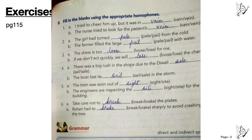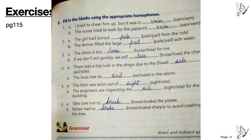Page number 115, number 1 answer vain and vane, only the difference is the spelling. Then number 2 pale and pail, number 3 lose and loose, number 4 sale S-A-L-E and sail S-A-I-L, number 5 sight S-I-G-H-T and site S-I-T-E, number 6 break B-R-E-A-K and brake B-R-A-K-E.